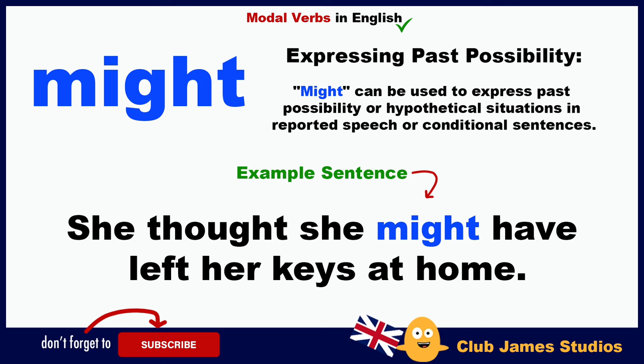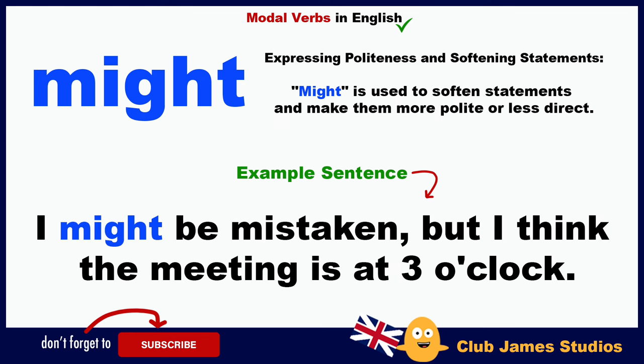Expressing past possibility: 'might' can be used to express past possibility or hypothetical situations in reported speech or conditional sentences. Example: she thought she might have left her keys at home. Expressing politeness and softening statements: I might be mistaken, but I think the meeting is at three o'clock.